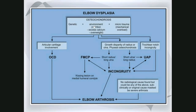Environmental effects can also influence osteochondrosis — for example, overnutrition, excessive calcium supplementation, or a young overweight dog. Microtrauma can also play a role with mechanical overload. If the articular cartilage is involved, specifically the thickened avascular articular cartilage, we have manifestation of OCD, with the end result being elbow arthrosis.